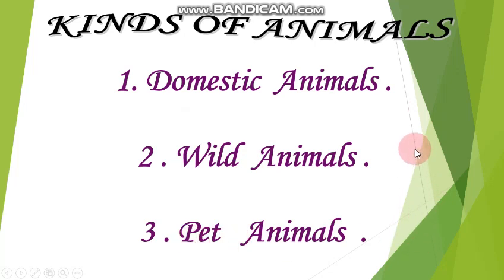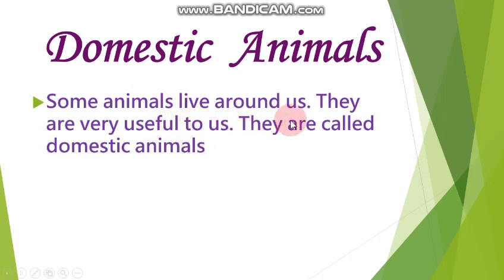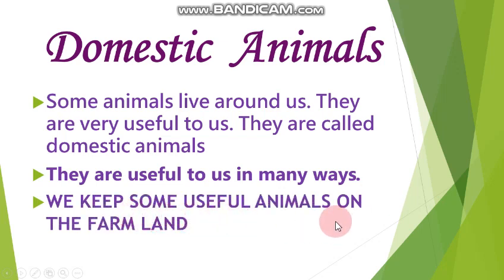Domestic animals: some animals live around us and are very useful to us — they are called domestic animals. They live around our house or on a farm. These domestic animals are useful to us in many ways. We keep some useful animals on the farmland to help us in our work.